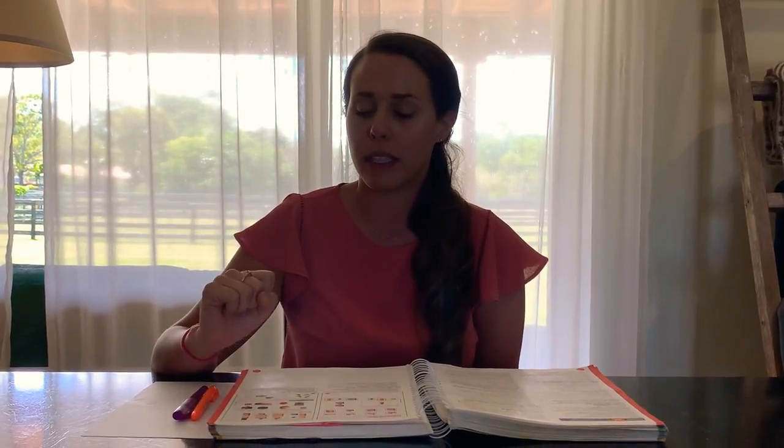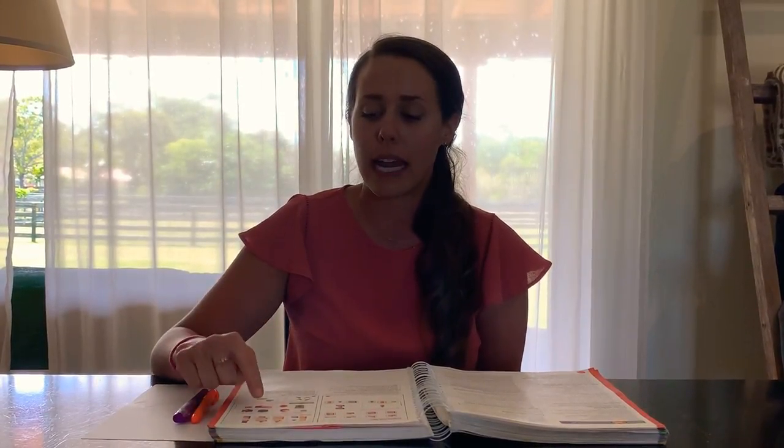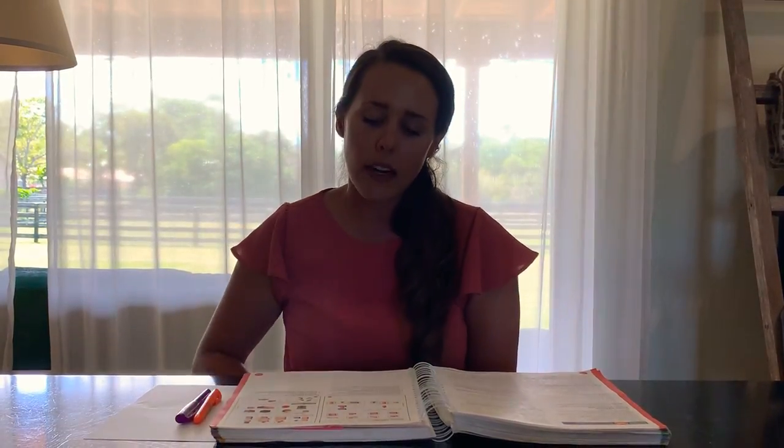For number four, you're going to complete that one on your own and name the set. Look at the pictures and name them. On the bottom, it's just a review. The directions say to circle the fraction that names the blue part of the set.